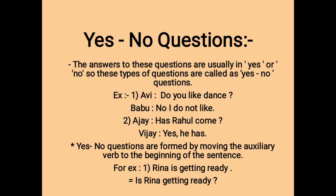A second example: Ajay asked, 'Has Rahul come?' Vijay said, 'Yes, he has.' Yes-no questions are formed by moving the auxiliary verb to the beginning of the sentence. For example, 'Rina is getting ready' becomes 'Is Rina getting ready?'